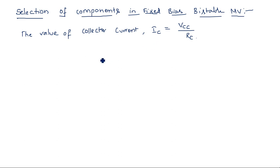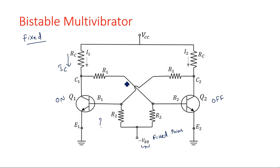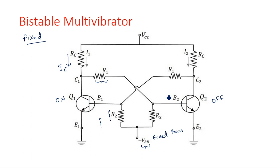The values of R1, R2, and VBB must be selected such that there is one stable state where the base current is large enough to drive the transistor into saturation. The values of R1 and R2 must be selected so that one transistor is in saturation and the other is in the cutoff region. That balance must be maintained.